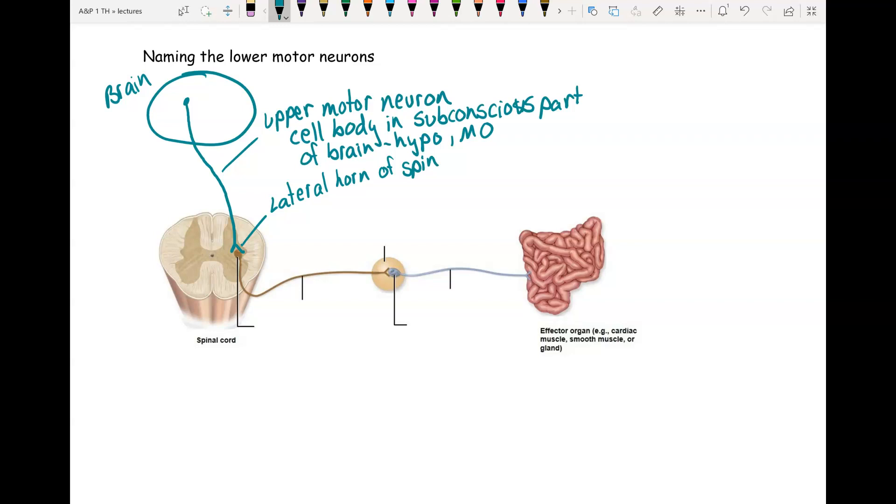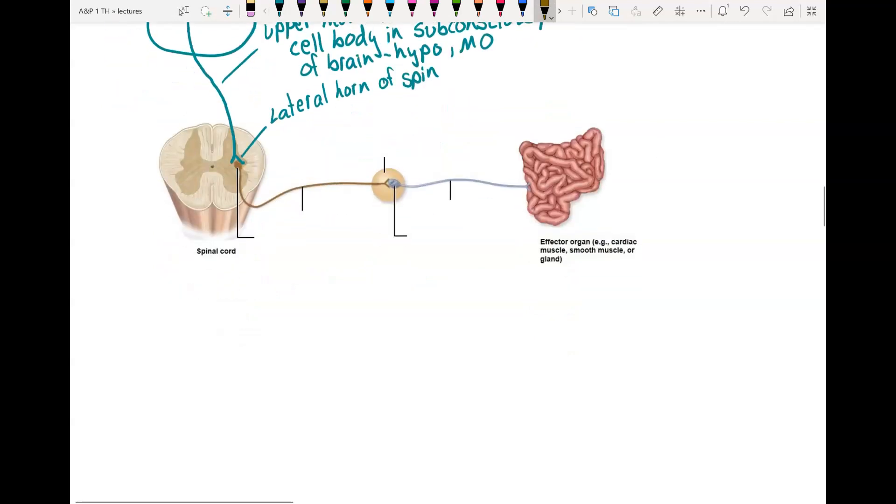Then we synapse. Notice here we have two lower motor neurons. So here we have a synapse. Here's our cell body. And this is what's going to receive neurotransmitter from the upper. Okay, then its axon is going to go through the anterior root.